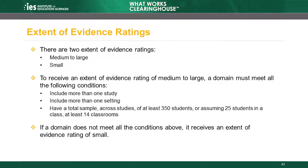The extent of evidence is designated as either medium to large or small. To receive an extent of evidence rating of medium to large, a domain must include more than one study, include more than one setting, and have a total sample across studies of at least 350 students, or assuming 25 students in a class, at least 14 classrooms. If a domain does not meet all the conditions, it receives an extent of evidence rating of small.